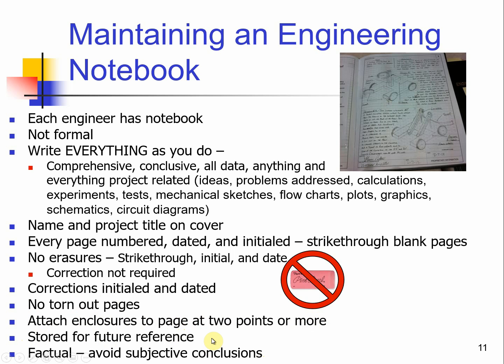You can attach enclosures to the page using two points or more — two staples or two pieces of tape. A good way to do it is to take an 8.5 by 11 page, fold it over once, and attach it to the notebook — one sheet per notebook page, not a whole bunch of sheets. It will be stored for future reference and needs to be factual.